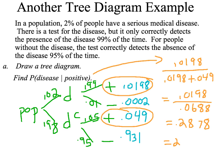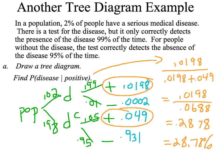That works out to about 0.2878, or 28.78%. Think about what that means in the real world — the test came up positive, but there's only about a 29% chance you actually have the disease. That's because the prevalence of the disease is relatively small, and the probability of a false positive is actually relatively high overall, making that false positive group much larger than the true positive group. It's a kind of surprising result, and we'll talk about it a little more in future chapters.